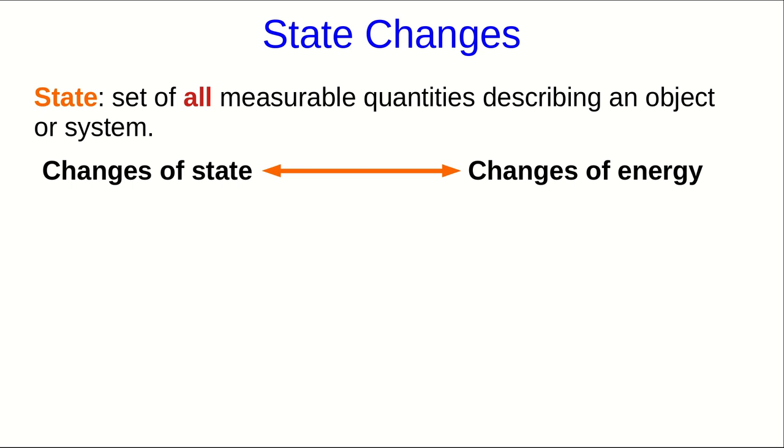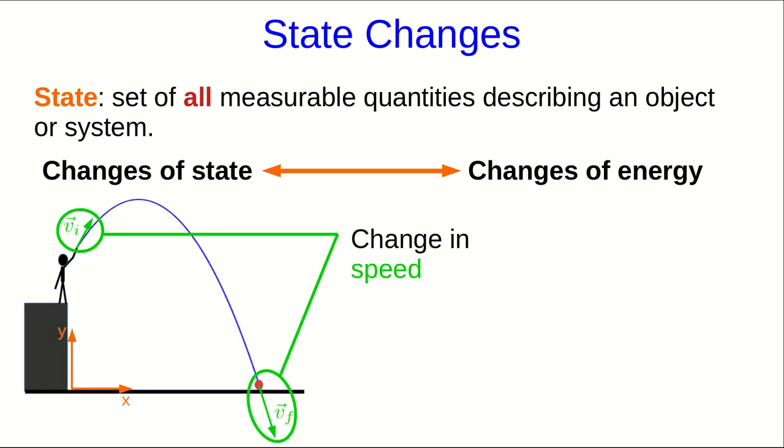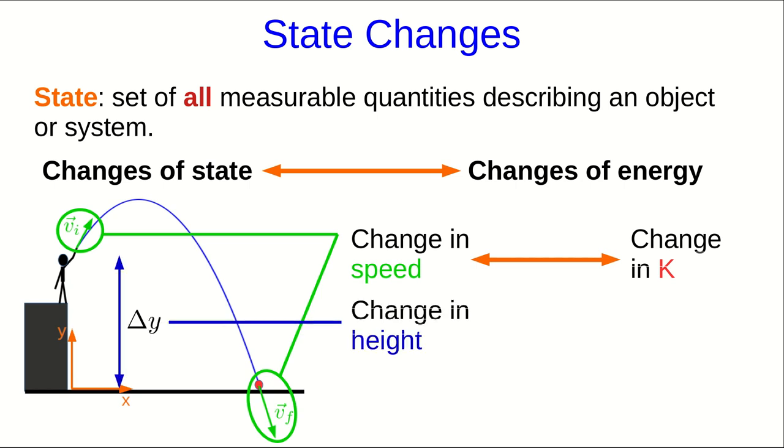And notice something. Energy is abstract. You can't see it. You can't even directly measure it. But changes in energy are always associated with changes in more concrete things that you can see or measure. So thinking about our ball, we see we've had changes in speed, and those are associated with changes in kinetic energy. And we have changes in height, which are associated with changes in gravitational potential energy.